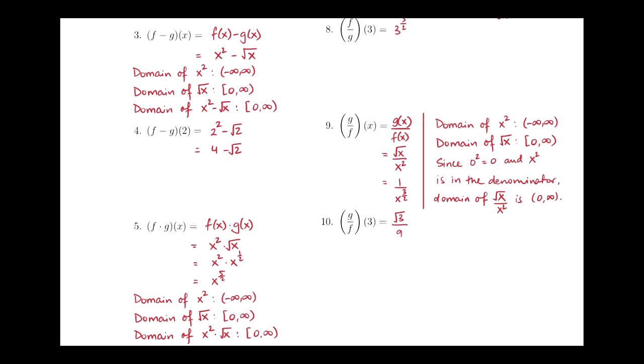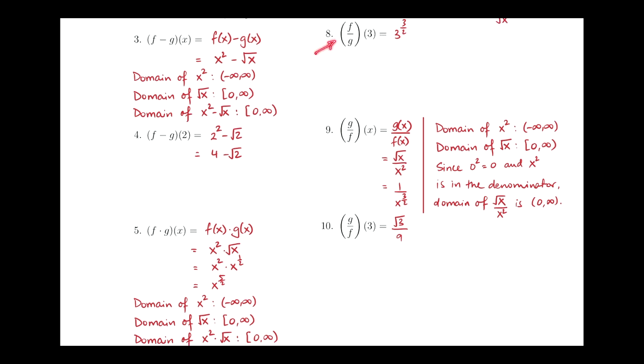And, for these last two parts, instead of f over g like we did here, these ones say g over f. So, again, the algebra is actually quite easy. Square root of x goes on top here, and x squared goes on the bottom. We can rewrite this as x to the 1 half over x squared. And, because we have the same base and we're dividing, we can use the quotient property to say that this will be x to the negative 3 halves. And, then we can use the negative power property to move that to the denominator, which will give us 1 over x to the positive 3 halves.